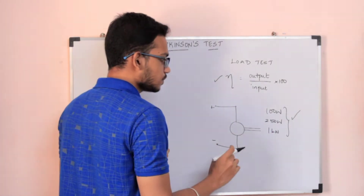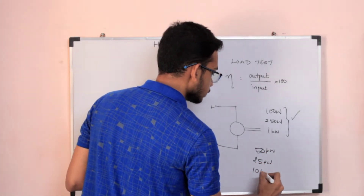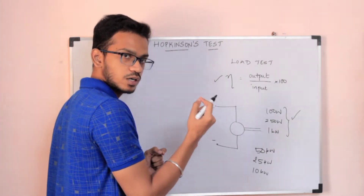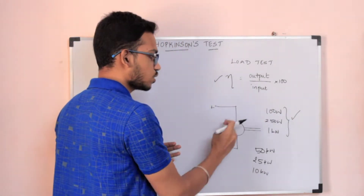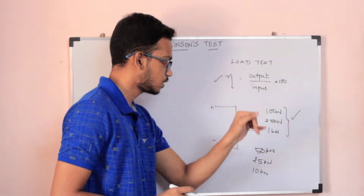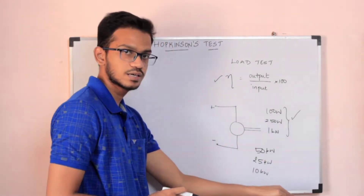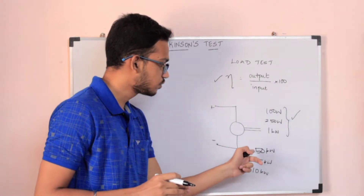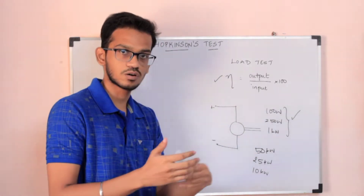But let's say we want to test a 50 Kilowatt machine. We need to apply a mechanical load of 50 Kilowatt. This is a drawback for high-rating machines — you need a lot of energy. In an industry with a 150 Kilowatt machine, if you do a load test, there is a lot of energy waste. That is why John Hopkinson, a physicist and electrical engineer, developed his test.